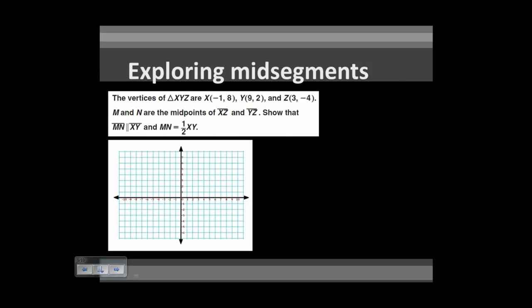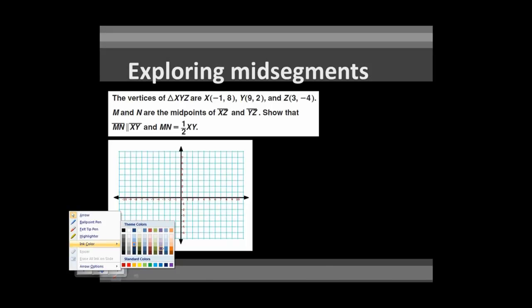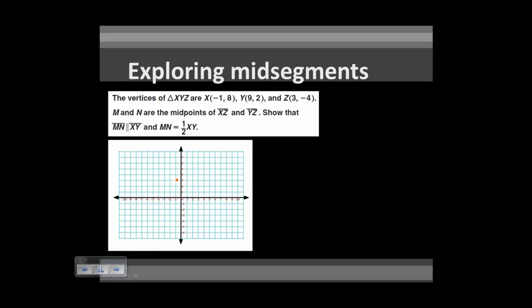Let's explore properties of mid-segments using triangle XYZ, where X is (−1, 8), Y is (9, 2), and Z is (3, −4). Plotting these points: X at (−1, 8), Y at (9, 2), and Z at (3, −4), we have triangle XYZ on the coordinate plane.